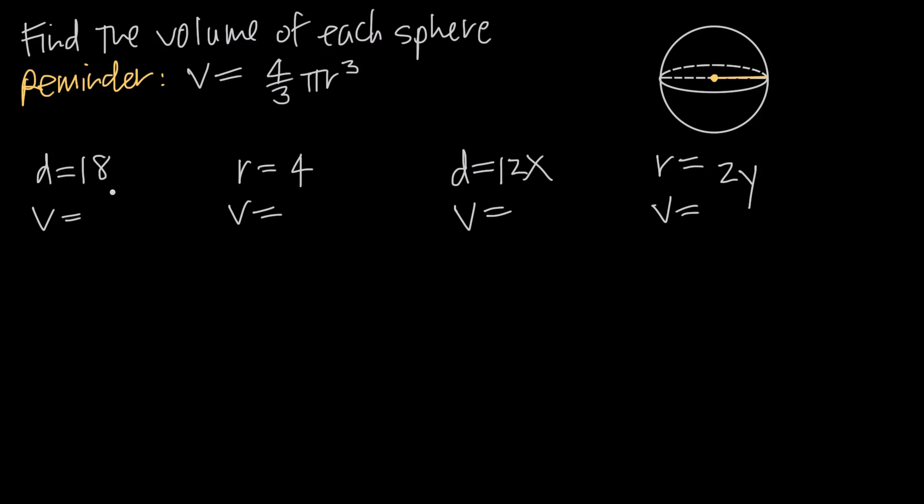So what happens if we're given the fact that the diameter of a sphere is 18 units and we've been asked to find volume? Well, remember diameter is just all the way across, radius is halfway across, so the diameter is twice the radius. So in order to find the radius, we just take half of the diameter. So since the diameter is 18, the radius has to be 9.